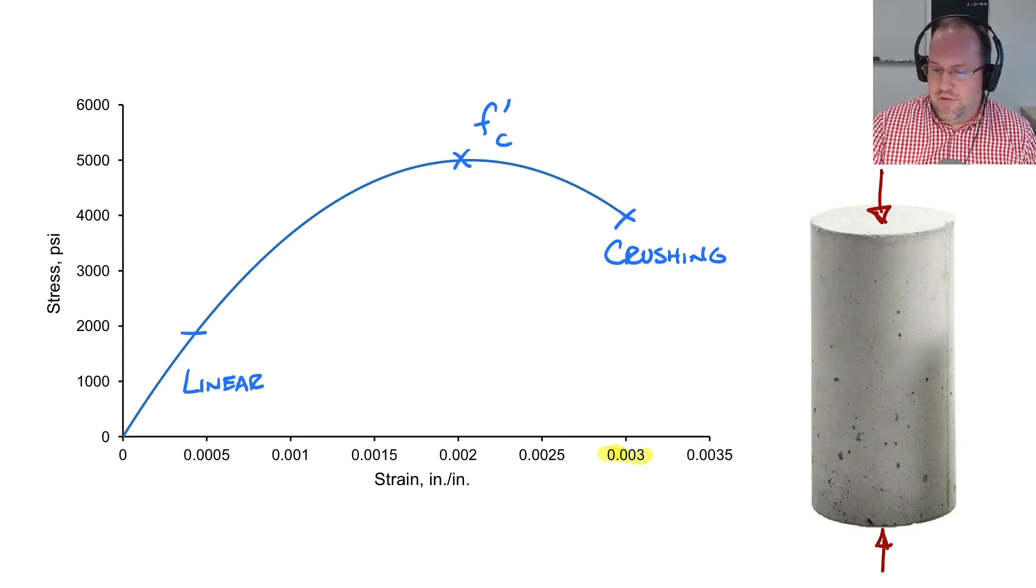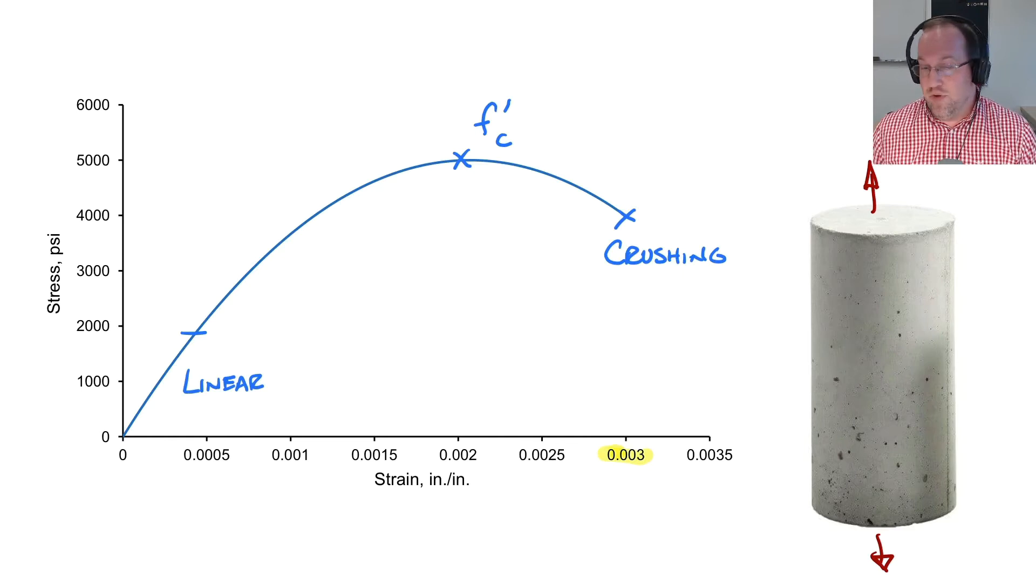Now on the flip side if I take this thing and I put it into tension we don't really get this sort of behavior at all. As you've probably noticed concrete in tension will crack and the strength of concrete in tension is roughly about one-tenth of its compressive strength. So for most design purposes we neglect that and say in tension it's cracked and ineffective. Now the steel will step in and take that part of my stress.